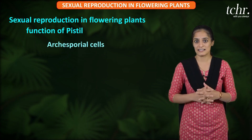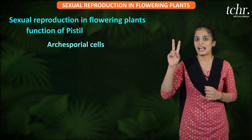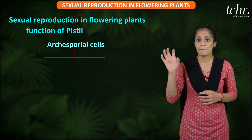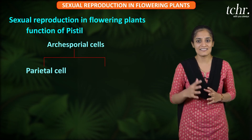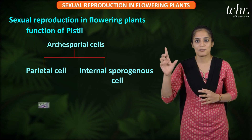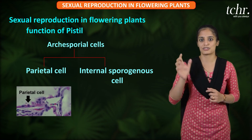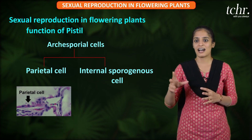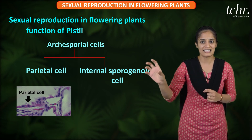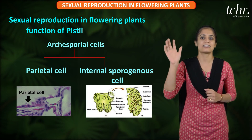Archesporial cells divide to form two major cells. One is the parietal cell, and the second is the internal sporogenous cell. Parietal cells give rise to the external layers of the anther wall, while the internal sporogenous tissue is developed from the sporogenous cell.